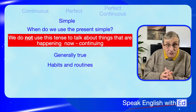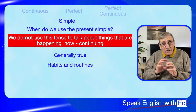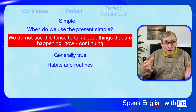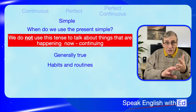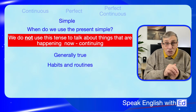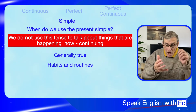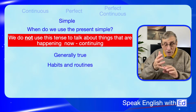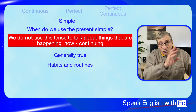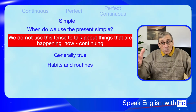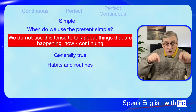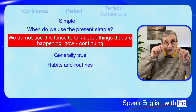A routine is slightly different. A routine is when you've got a few things bunched together. For instance, in the morning you wake up, you go to the bathroom, you brush your teeth, you go downstairs, you take the dog for a walk, you come back, you have breakfast, and then you catch the 8:45 bus and go to work. That is a routine, and when you're talking about routines like that you use the present simple tense.